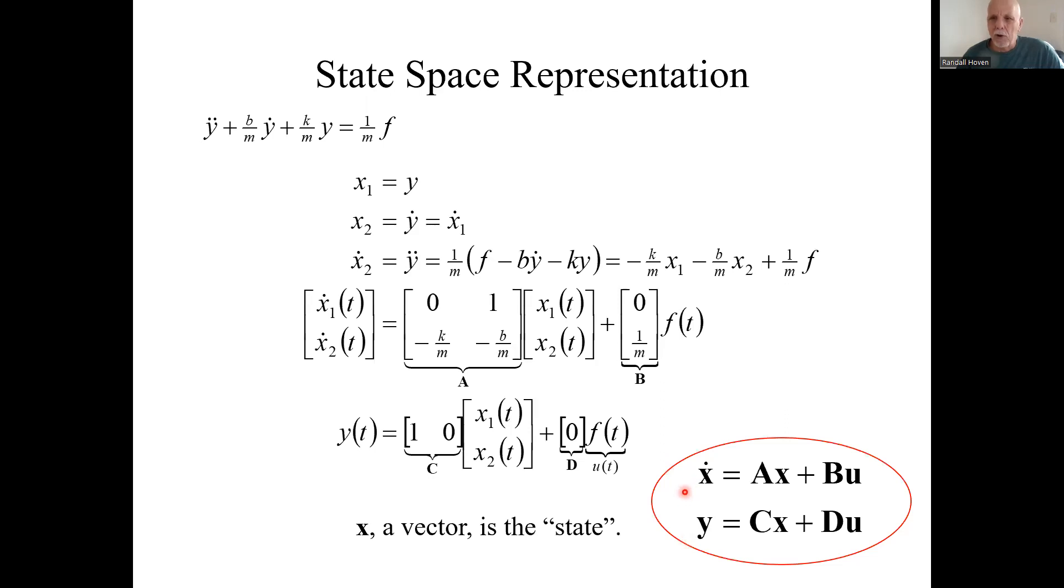x is our state, and this is called the state space representation. Now we're talking state space, and we suddenly entered modern control theory. Everything we've done up to now has been classical controls. So now we're starting modern control, state space.